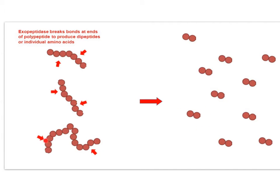So exopeptidases break off the last two amino acids — they break off dipeptides from each of the chunks and keep doing that until you've got lots of dipeptides. The advantage of the endopeptidase is that because we've now got three polypeptide chains, there are more ends — it's like increasing the surface area for the exopeptidases to work.